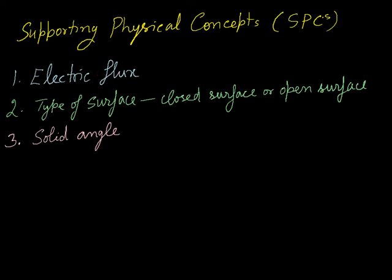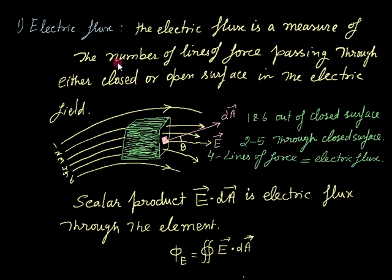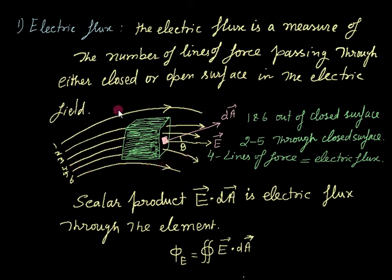First of all, what is electric flux and how can one visualize it? Electric flux is basically a measure of the number of lines of force passing through either a closed or open surface in the electric field. You can consider this an electric field in which there is a closed surface — this highlighted area — and through it the electric field lines of force pass. So this number of lines, one, two, three, four — these four lines are basically the electric flux.